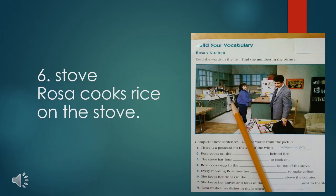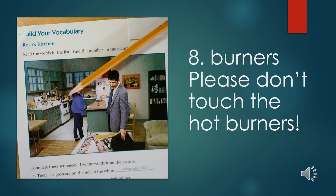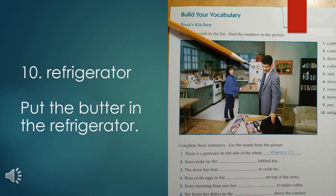Number six: stove. Rosa cooks rice on the stove. Number seven: oven. She bakes cookies in the oven. Number eight: burners. Please don't touch the hot burners. Number nine: pan. She cooks bacon and eggs in the pan. Number ten: refrigerator. Put the butter in the refrigerator.